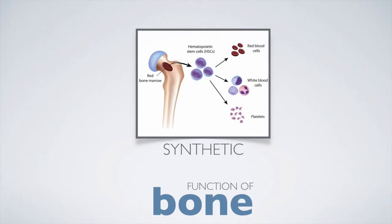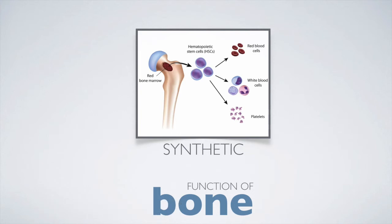The inner cancellous part of bone contains bone marrow. Bone marrow produces blood cells in a process called hematopoiesis. Blood cells created in bone marrow include white blood cells and red blood cells. Bone marrow is also one of the major sites where defective or aged red blood cells are destroyed.